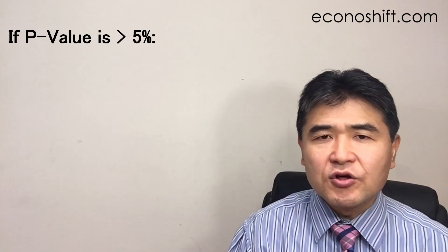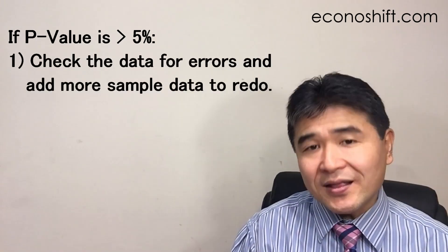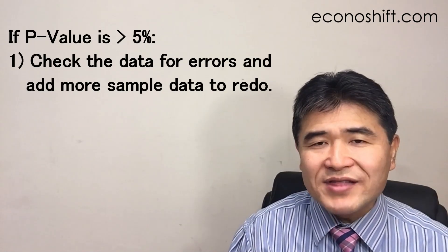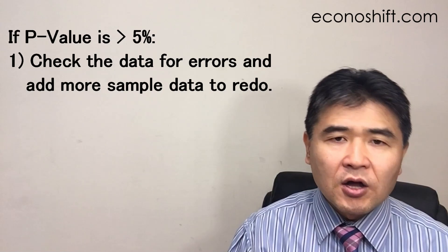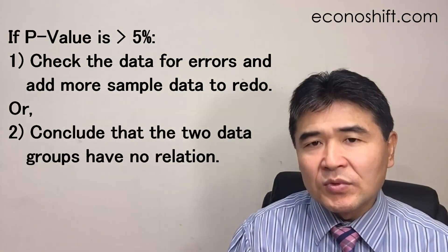If this p-value is more than 5%, you need to check the data for errors and add more sample data to reduce the analysis or conclude that the two data groups have no relation. In our case, it's less than 5%, so I can continue to the next step.